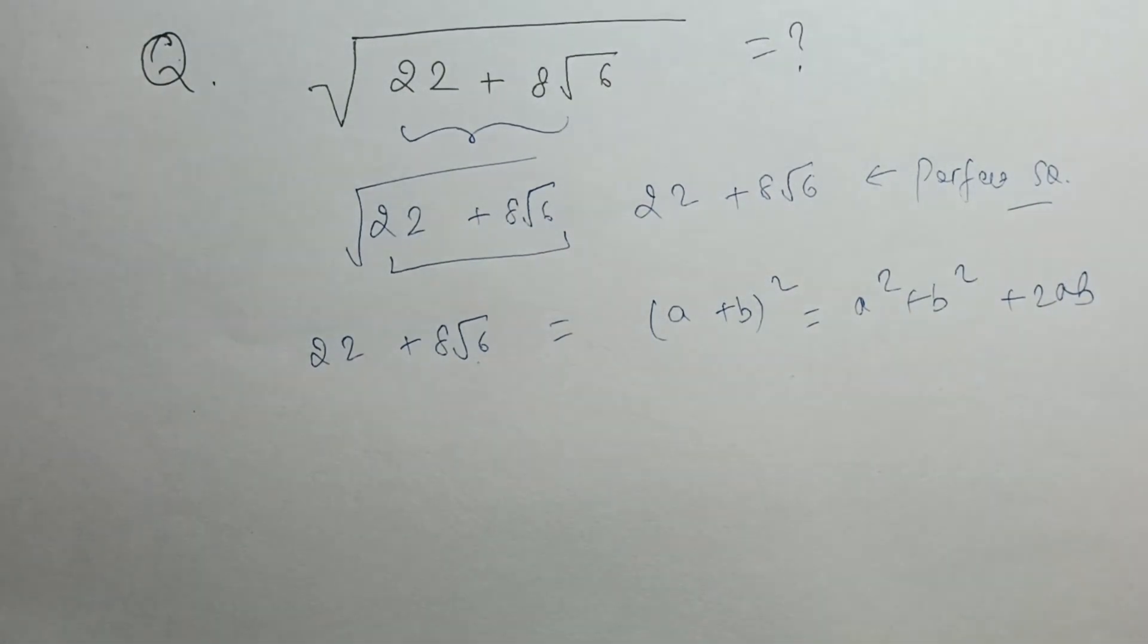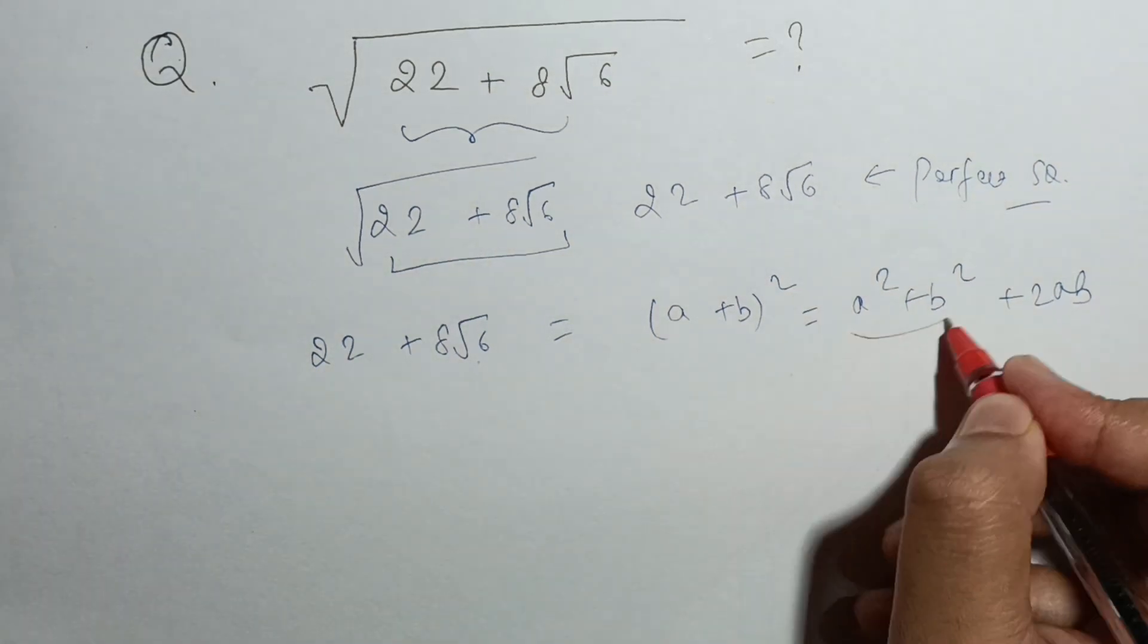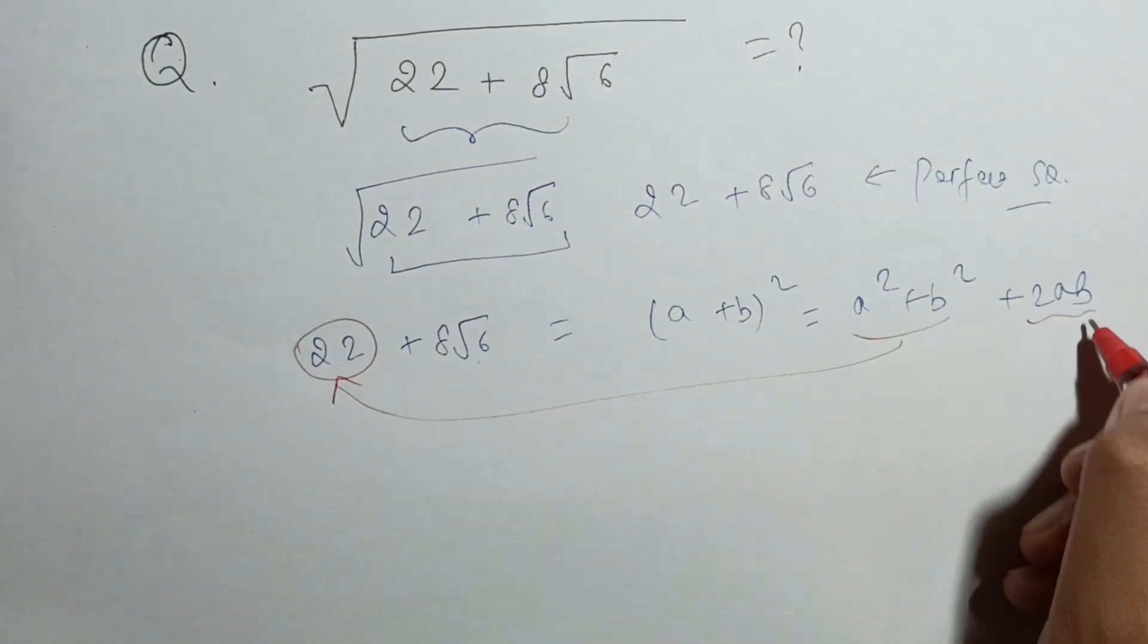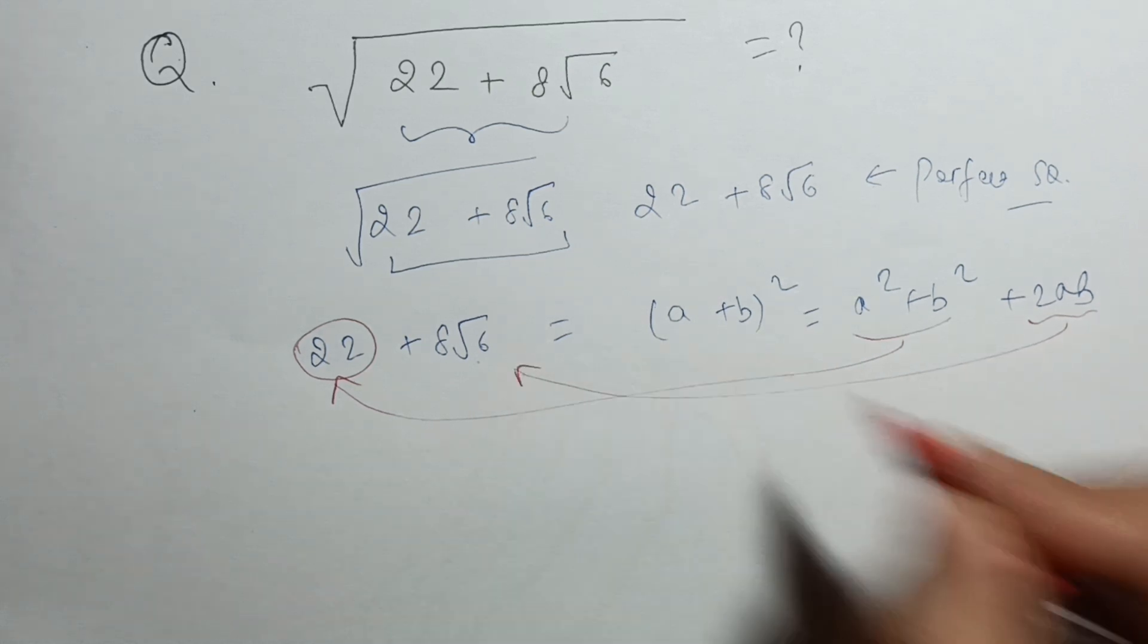So if I map them, I can map like this: a squared plus b squared can be mapped with 22, and 2ab can be mapped with 8 root 6.